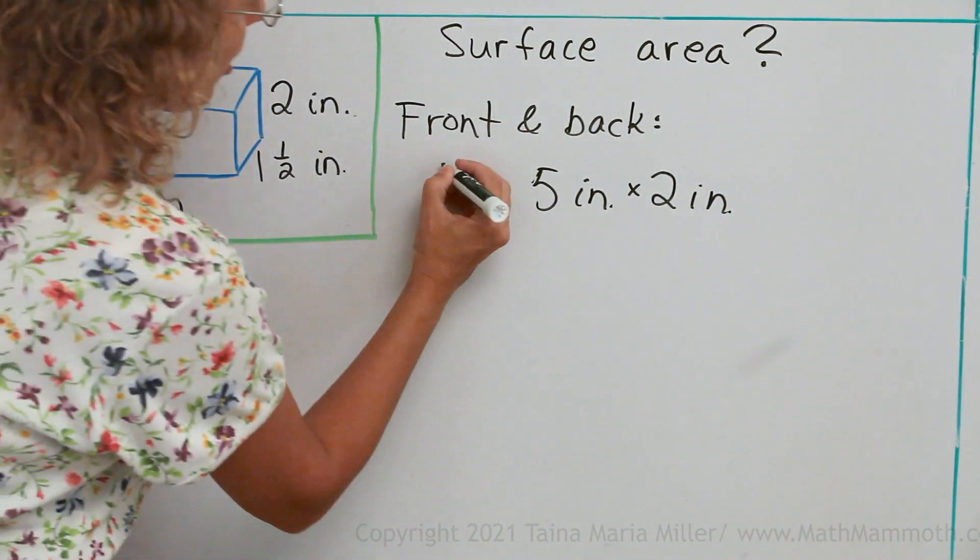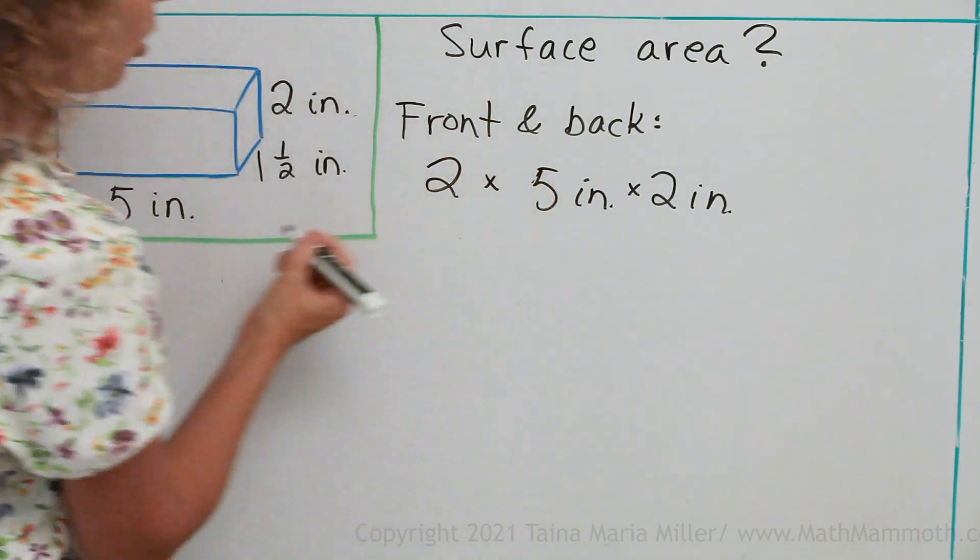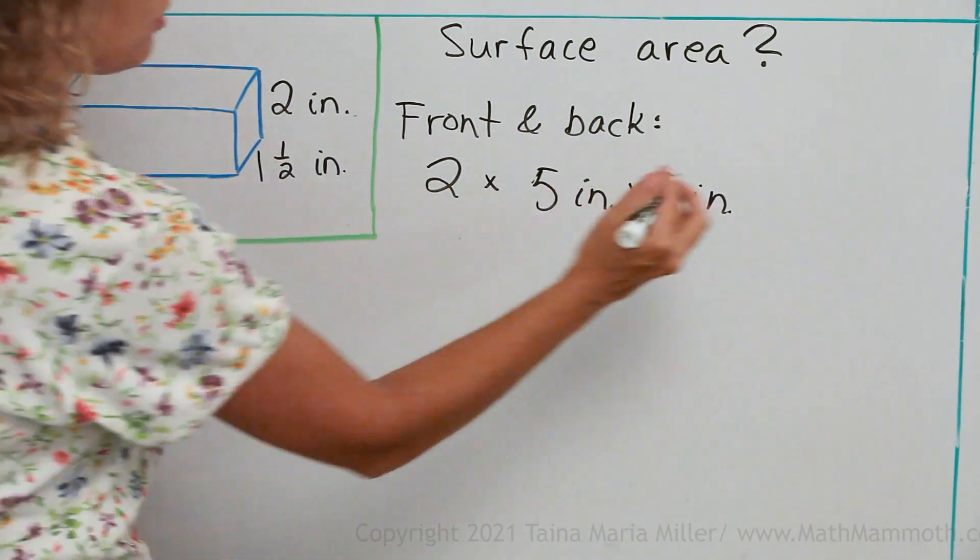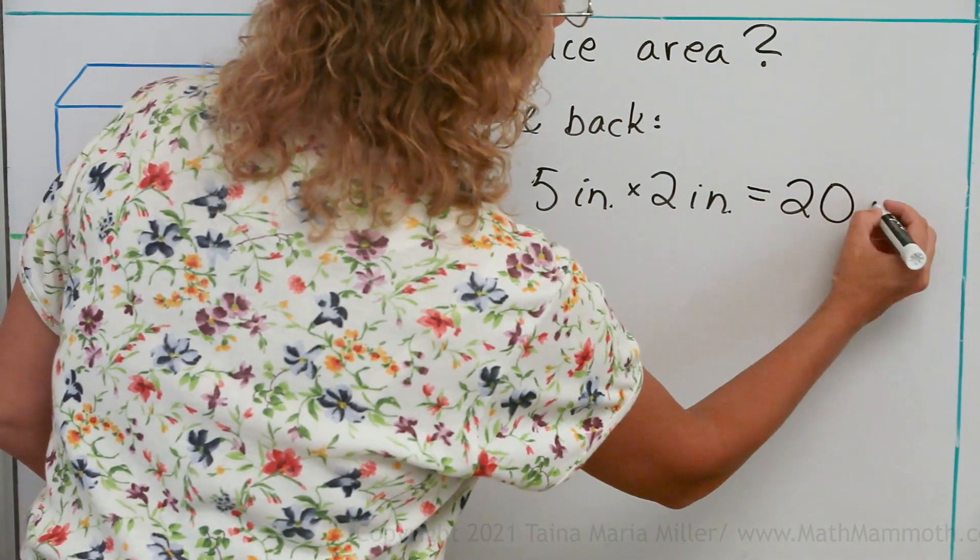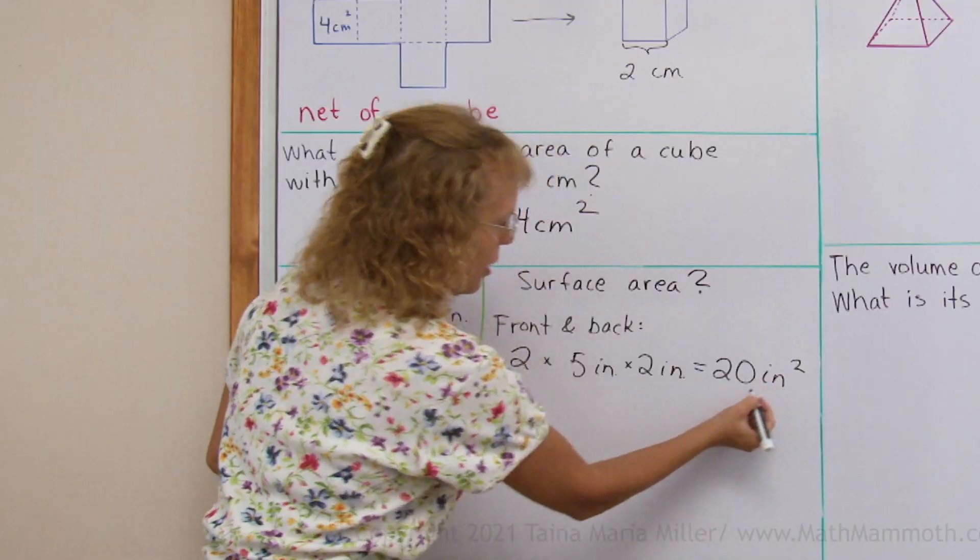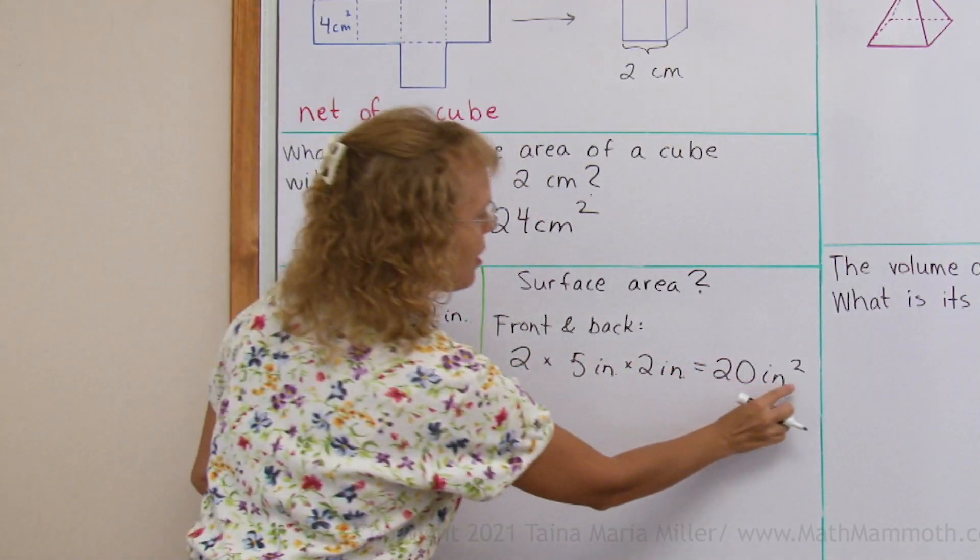But there's two of them, the front and the back, so I'm going to multiply it times 2. So I have 10 here times 2, which equals 20 square inches. Notice we're calculating area here, so I have square inches.